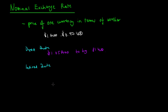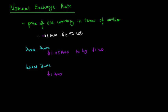An indirect quote, however, is how much of the foreign currency is required to purchase one unit of the domestic currency. So if we have one AUD, how much foreign currency is needed to buy one unit of the domestic currency? That would be an example of an indirect quote.